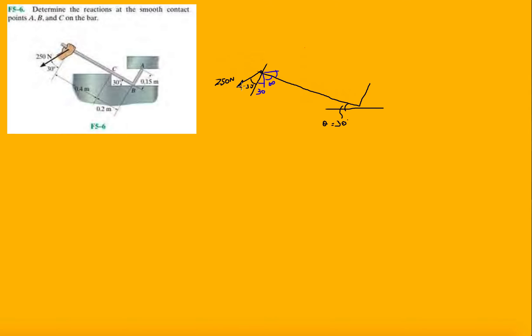So normal force at B, normal force at A. And then over here we have, at C is the only one that's off to the side, we have N_C. But then we know that this is 60 degrees.